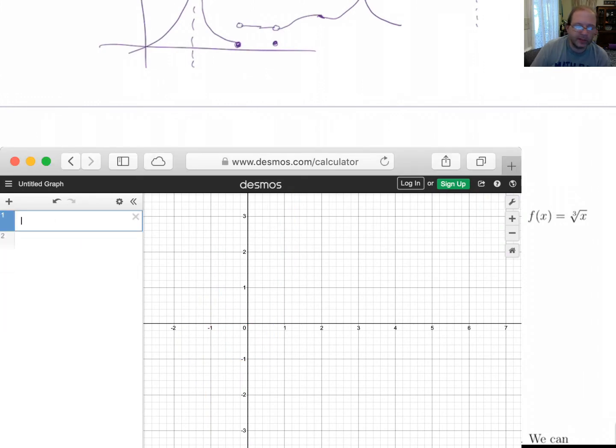Now, Desmos, I don't think will let you type in cube root. There's a way you can force it to put a cube root, but it doesn't really work. But if you put in x raised to the one-third power, that gives you the cube root.